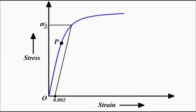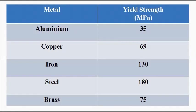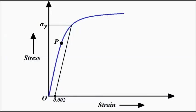For different materials they will have different yield strength values. Here we have taken the yield strength values for some commonly used materials. The unit of yield strength is megapascal. For aluminum, copper, iron, steel, and brass the yield strength values are 35, 65, 69, 130, 180, and 75 megapascal respectively. So this is the concept of yield strength: the transition point between the linear elastic region and the plastic region.